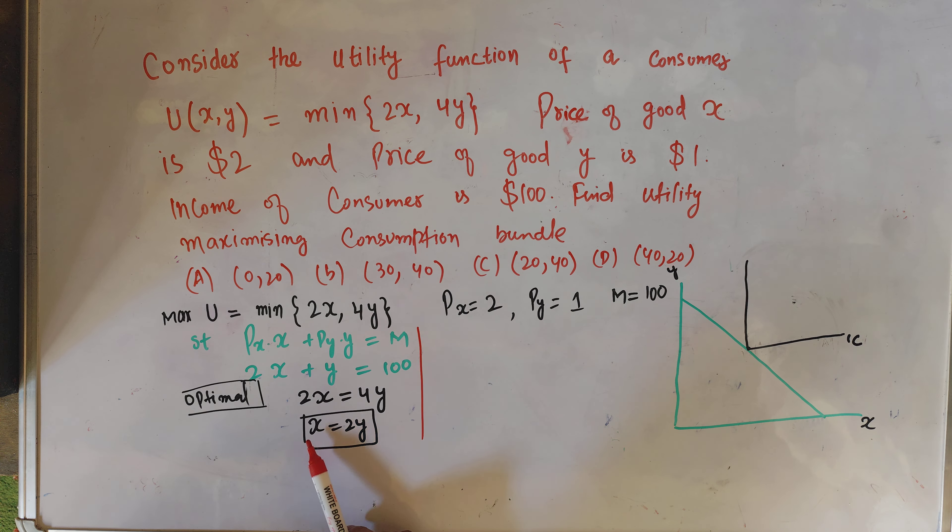Let me give an example to make this clearer. Consider a simpler utility function U = minimum of x comma y. Drawing the indifference curve and the budget line, we know that the optimal mix requires equating the terms in the parenthesis, meaning x should equal y. The indifference curve has a right-angle kink at that point.